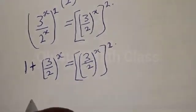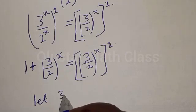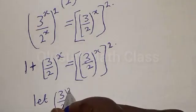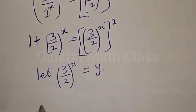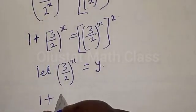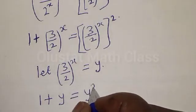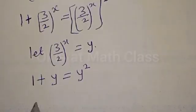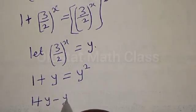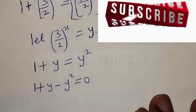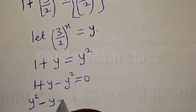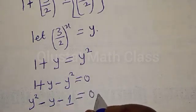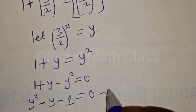Now let's substitute: let y equal (3 divided by 2) raised to power x. Therefore our equation becomes 1 plus y equal to y squared. Equating to zero, we have y squared minus y minus 1 equal to 0. Let's call this equation star — it is a quadratic equation.